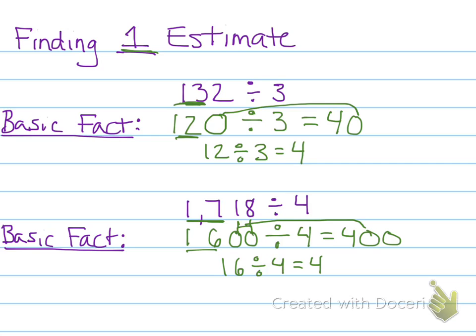That's how you find one estimate, right? You look for the basic fact. You try to find a number that your divisor will go into evenly, right, to make it easy on yourself. You change the rest of the numbers, or you change the rest of the digits in the number to 0. Let's try a couple more.